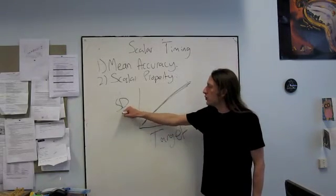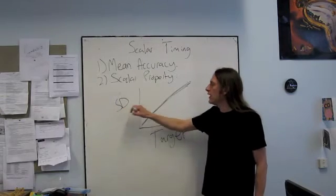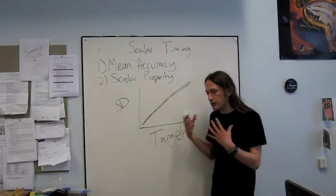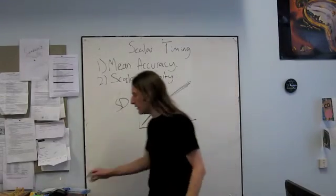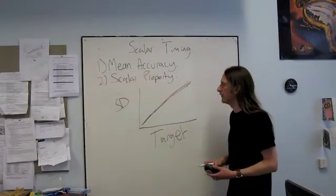If the standard deviation is always a constant fraction of the mean, then that number should always be equal, should always give the same result. So this is called the coefficient of variation. It's our test of the scalar property.